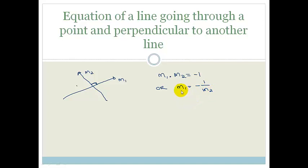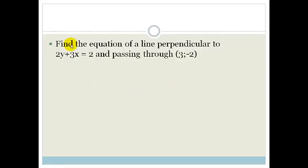So that's what we're going to be using in this set of notes. We're going to be looking for the equation of a line going through a point, and the other line is going to be perpendicular. So let's look at an example. First of all, it says find the equation of the line perpendicular to 2y plus 3x is equal to 2, and passing through the point (3, -2).